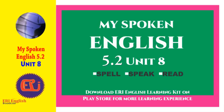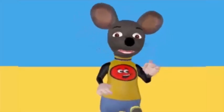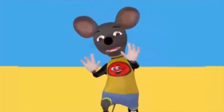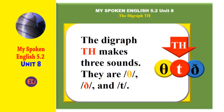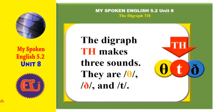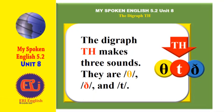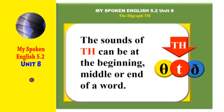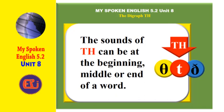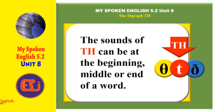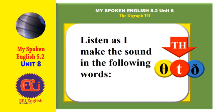My Spoken English 5.2, Unit 8: Speak the English the world understands. The diagraph TH makes three sounds: TH, V, and T. The sounds of TH can be at the beginning, middle, or end of a word. Listen as I make the sound in the following words.